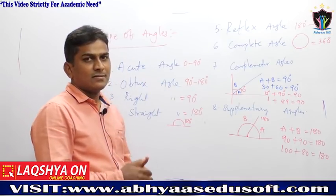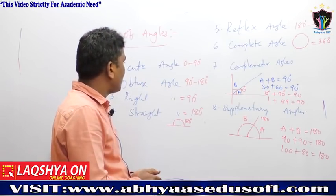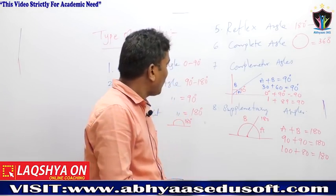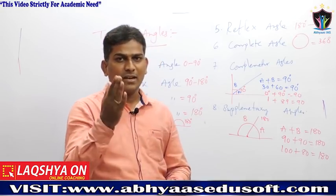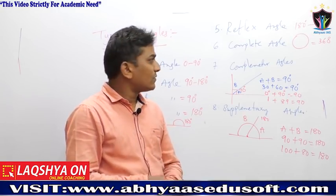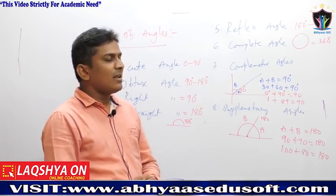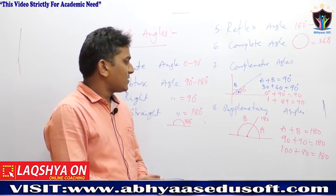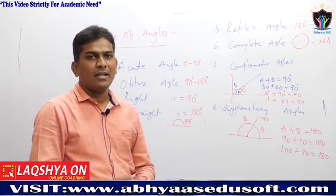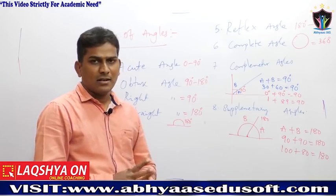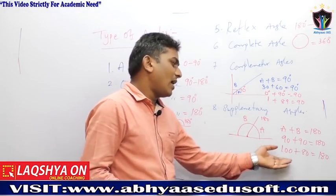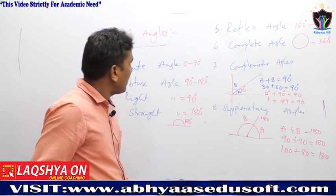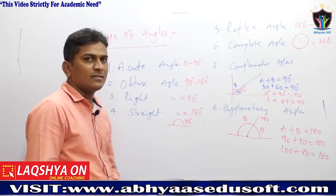To recap: acute angle is 0 to 90 degrees, obtuse angle is 90 to 180, right angle equals 90, straight angle equals 180, reflex angle is 180 to 360, and complete angle equals 360 degrees. Complementary angles sum to 90 degrees; supplementary angles sum to 180 degrees. For example, 100 plus 80 equals 180, so they are supplementary to each other.